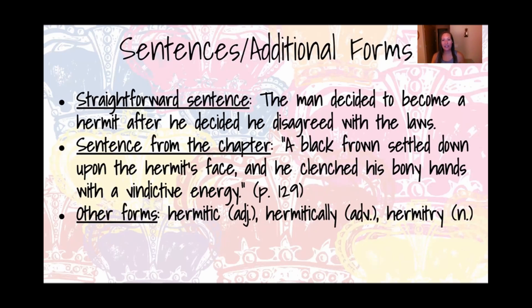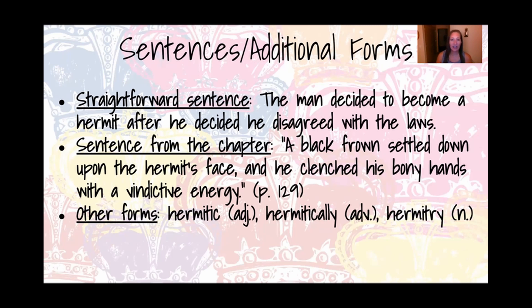For example sentences, we have a straightforward one: 'The man decided to become a hermit after he decided he disagreed with the laws.' He didn't like the laws of his country or city, so he moved and decided to become a hermit. Our actual sentence from the chapter is: 'A black frown settled down upon the hermit's face and he clenched his bony hands with a vindictive energy.' The word hermit comes up throughout Chapter 20 and Chapter 21 because he is that character.